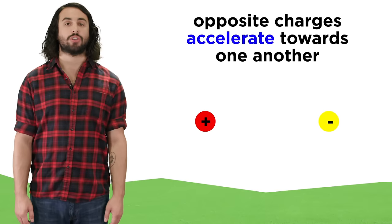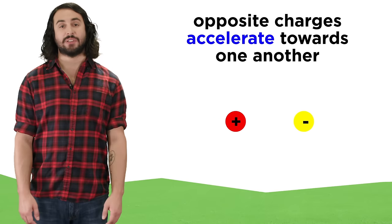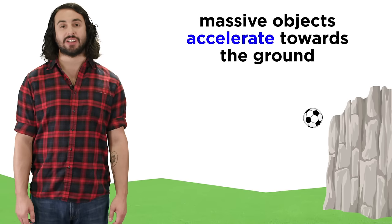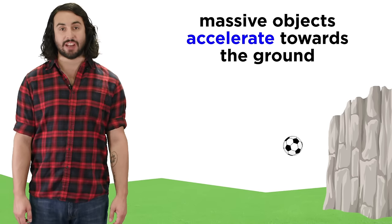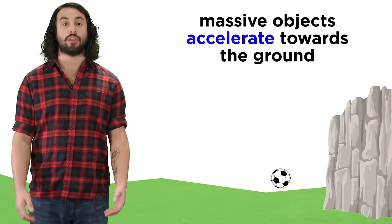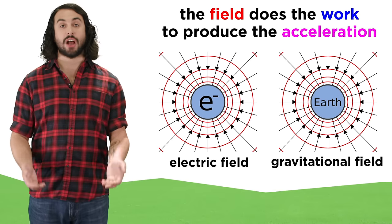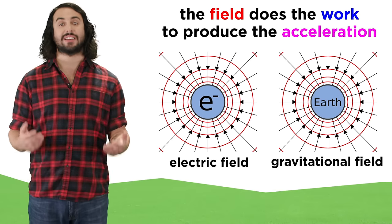Oppositely charged particles, because of their charge, have the potential to accelerate towards each other just like an object on the edge of a cliff has the potential to accelerate towards the earth because of its mass, and in each case it is the field that does the work to produce the acceleration.